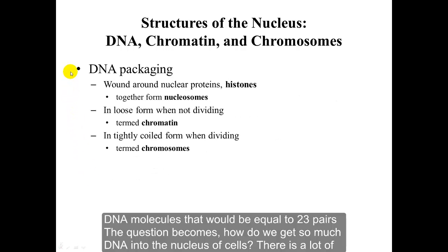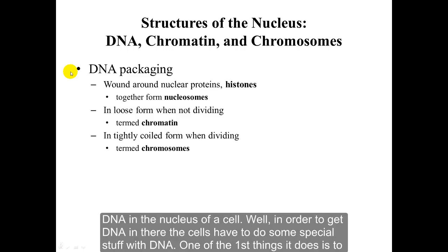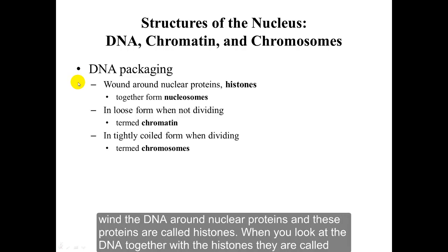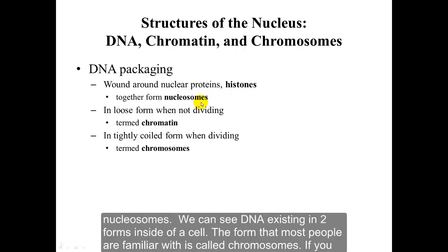The question becomes: how do we get so much DNA into the nucleus of cells? In order to get it in there, the cell has to do some special things with DNA. One of the first things it does is wind the DNA around nuclear proteins called histones. When you look at the DNA together with the histones, these are called nucleosomes.